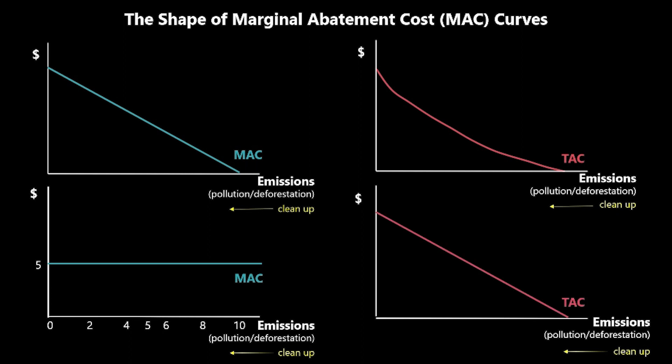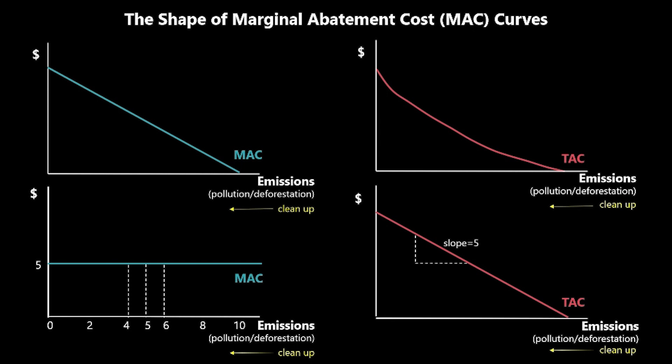What this means is that the total abatement cost curve is going to be downward sloping with emissions. For example, at emission level 6, the sixth unit of pollution costs $5 to clean up. Moving to 5 costs an additional $5, and moving to 4 costs another $5. So each unit of emissions cleaned up adds $5 to the total cost, meaning the slope of the total cost curve equals 5 at each emissions level.